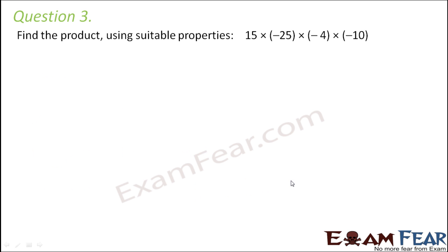Question number 3. Find the product using suitable properties: 15 × (-25) × (-4) × (-10). So here, what do we see? We see that we have 3 negative integers. So number of negative integers is odd. Therefore, the net product will be negative. But how do we arrange it better? So we place 15 and 10 together because you know, 15 and 10 when multiplied gives a number with more zeros. And that makes our calculations simpler. So we group them together, and we group -25 and -4 together.